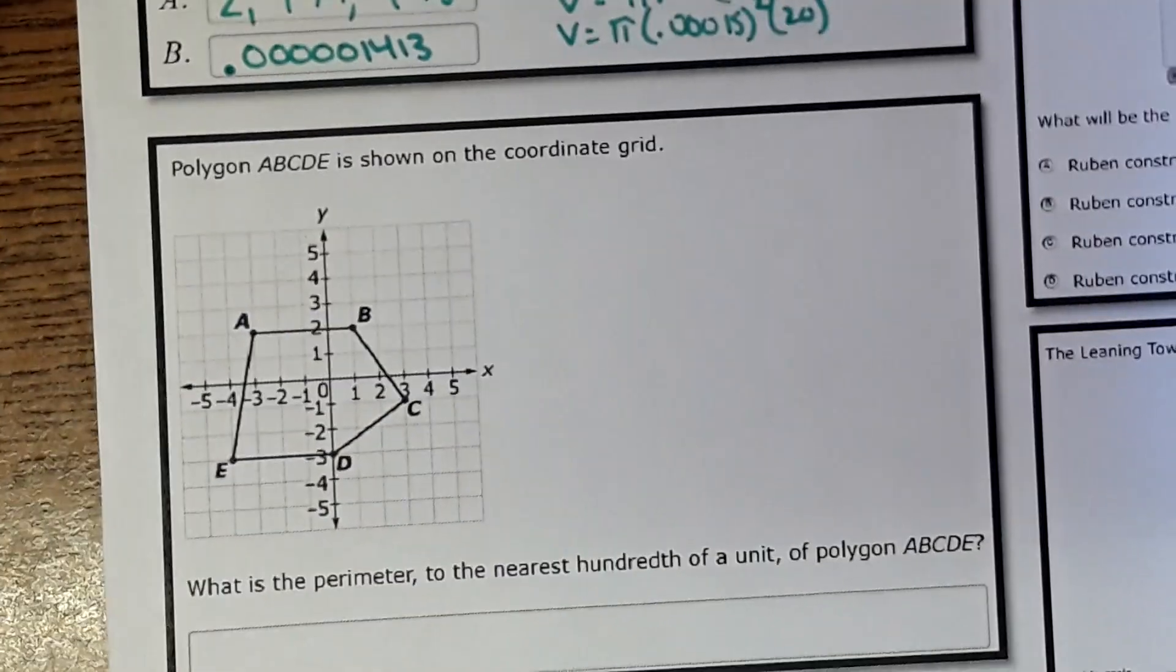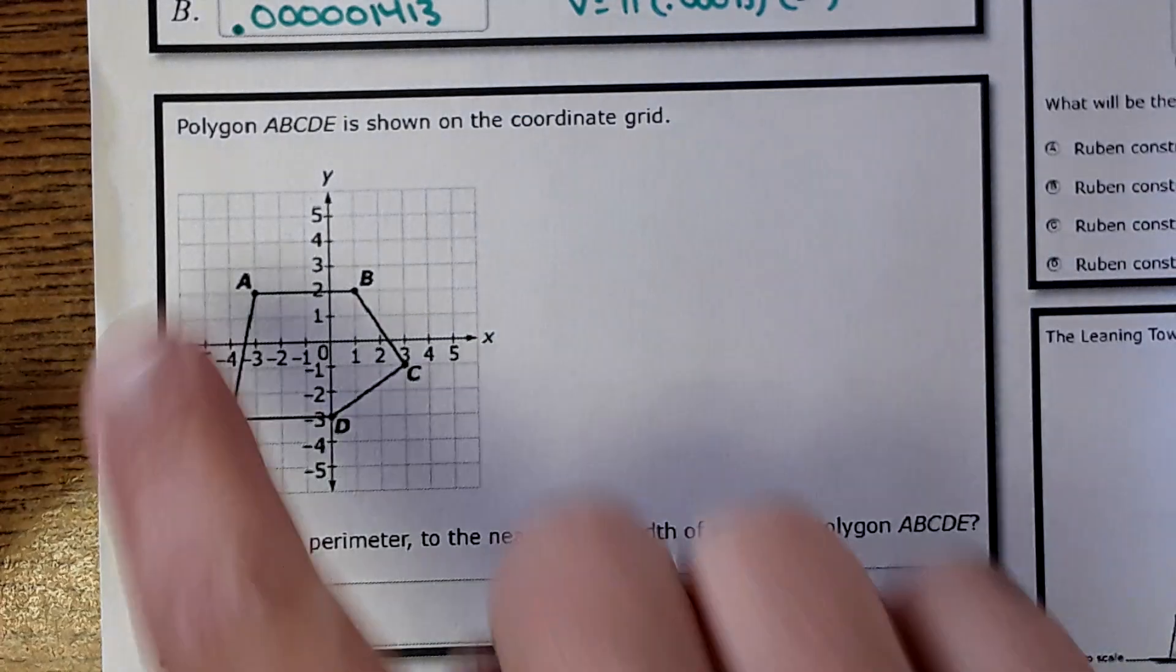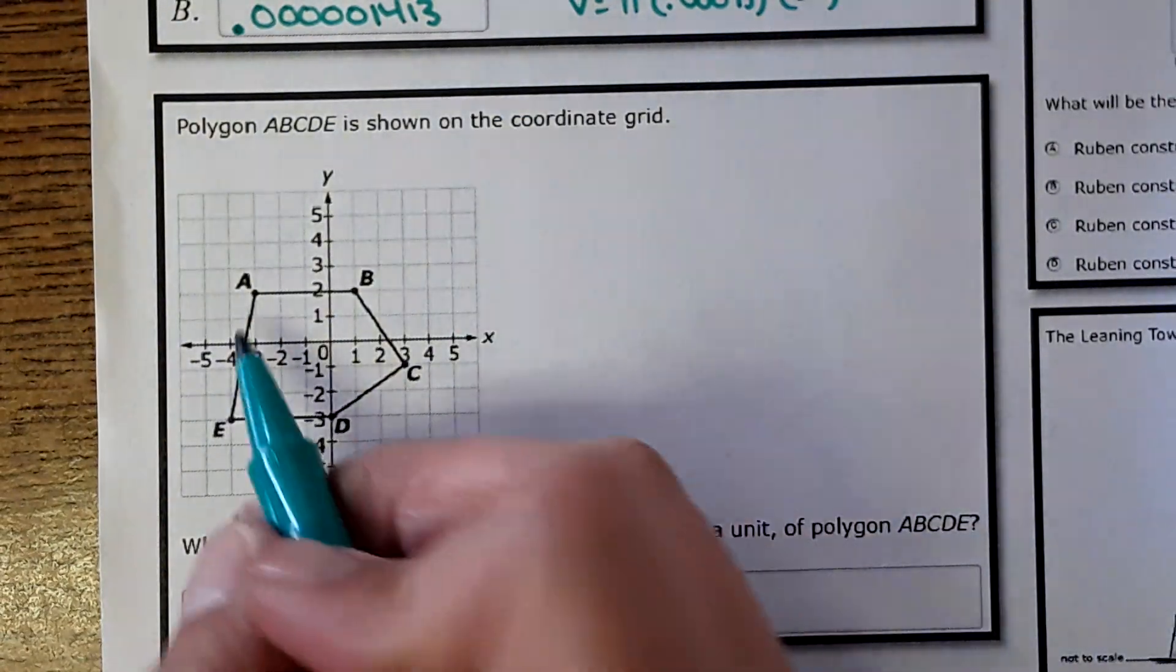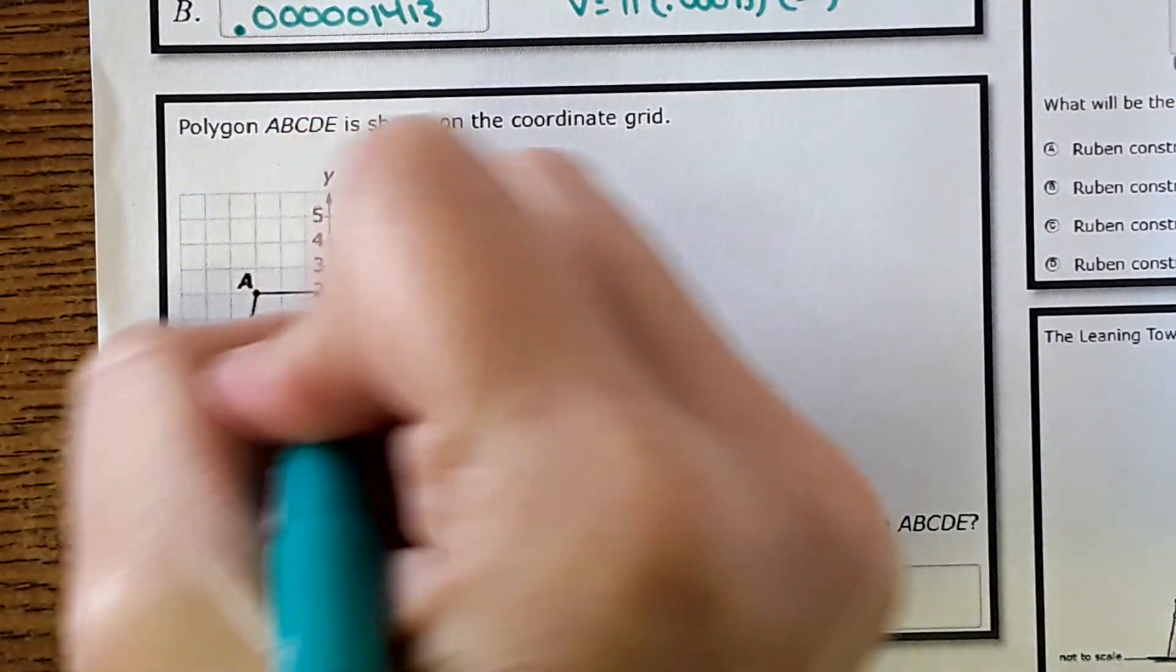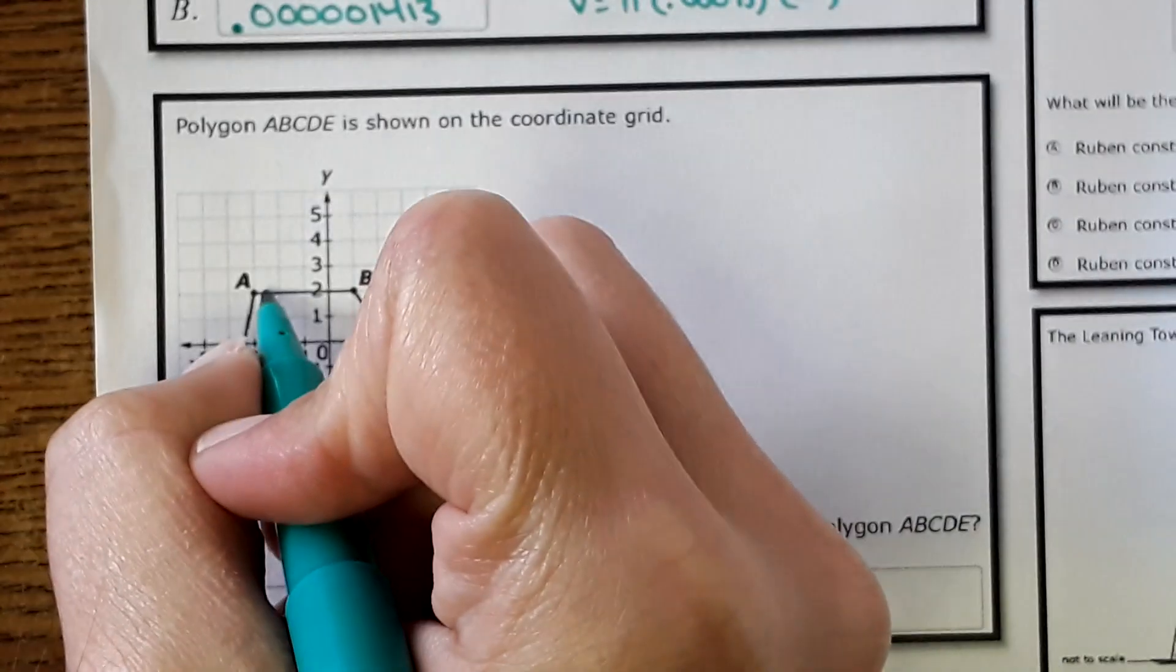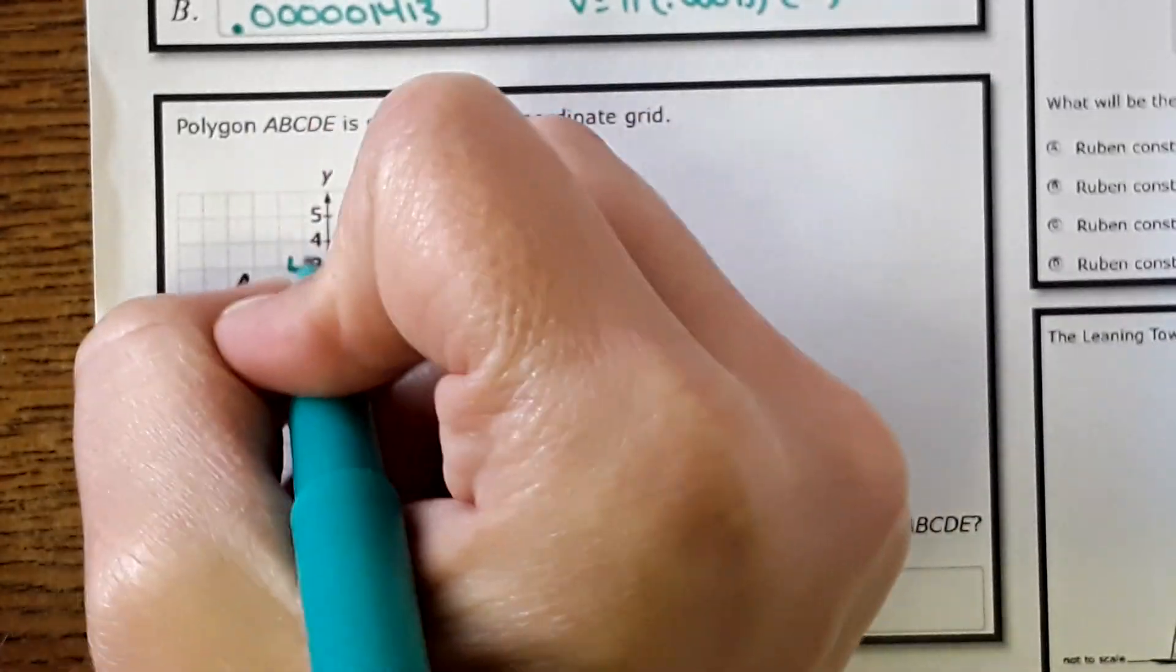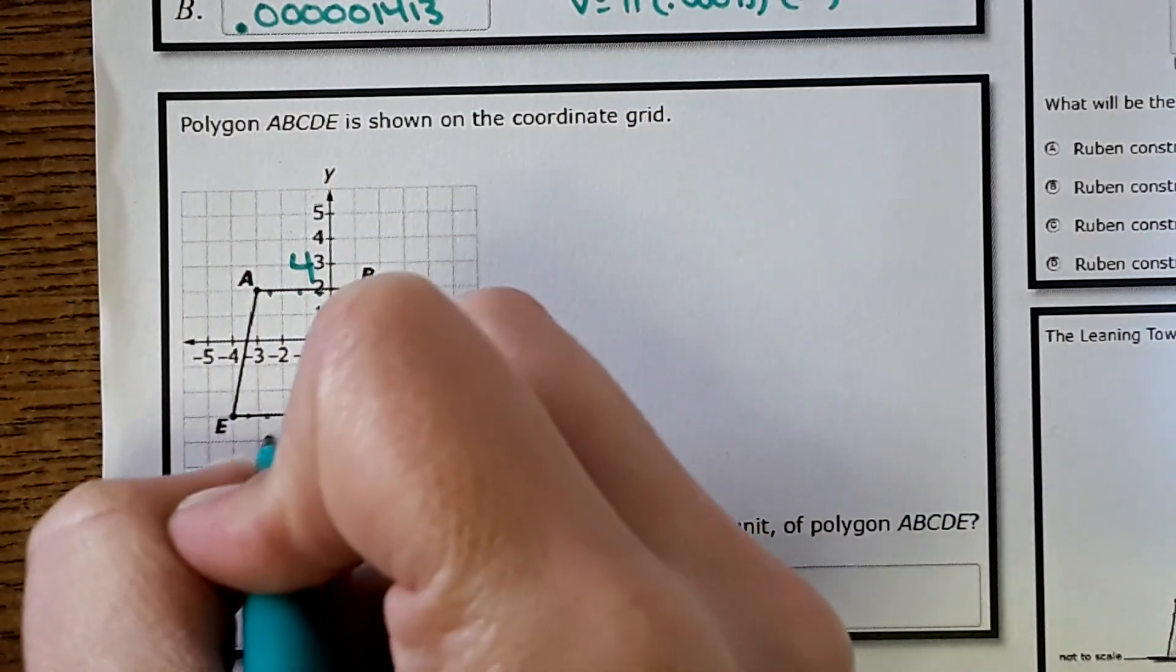Okay, the next one, we have to find the perimeter of the shape. Perimeter is the distance around the shape. Anything that is horizontal or vertical, you can just count the unit. So 1, 2, 3, 4 units here. 1, 2, 3, 4 units here.